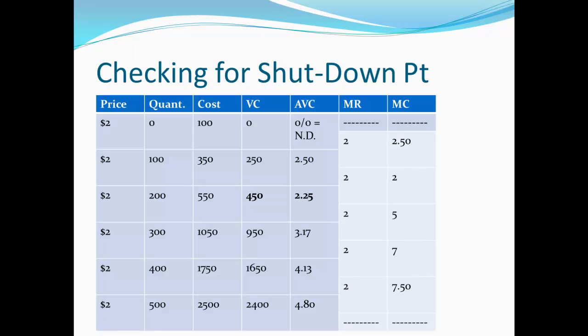To check for the shutdown point, I've added a new column for average variable cost — just take the variable cost and divide by quantity. The first row is 0 divided by 0, which is undefined, so we skip it. At 100 units: variable cost $250 divided by 100 gives $2.50. At 200 units: $450 divided by 200 gives $2.25. At 300 units: $950 divided by 300 gives $3.17. The lowest average variable cost is $2.25, so if the price falls below $2.25, we should produce nothing at all.